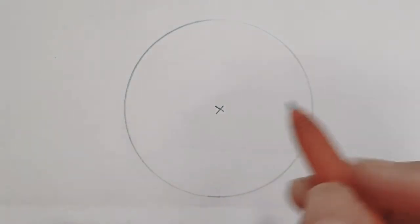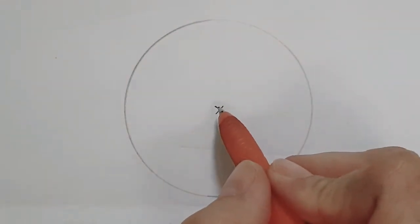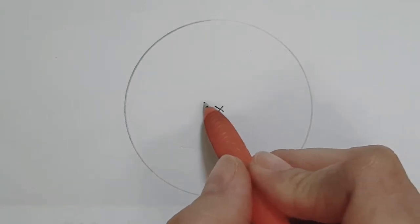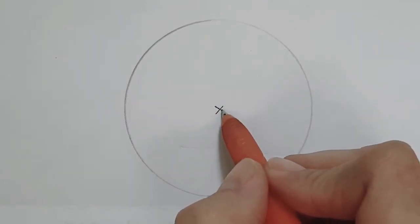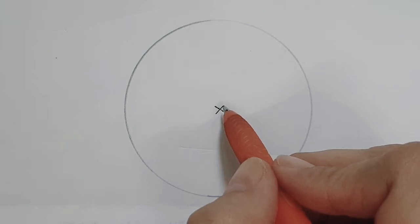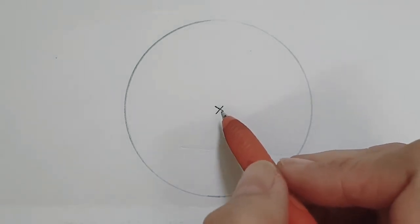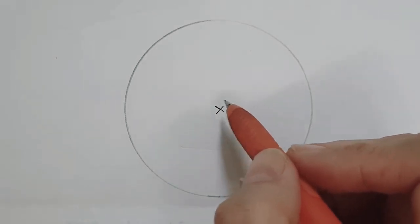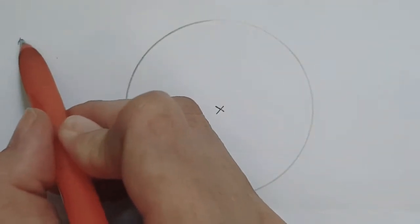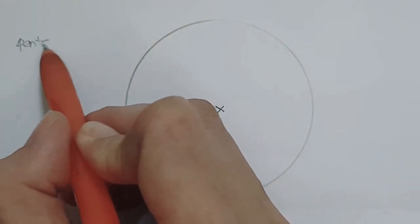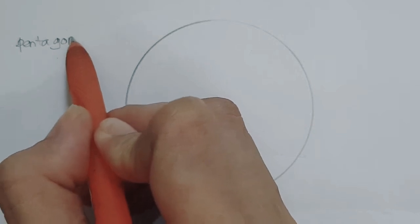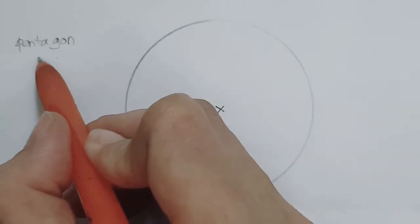If we want to construct a pentagon, we have to divide the angle at the center into five equal parts. If we want to construct a regular octagon, then we have to divide the center of the circle into eight equal parts. In this case we are going to construct a regular pentagon, therefore it has five sides.